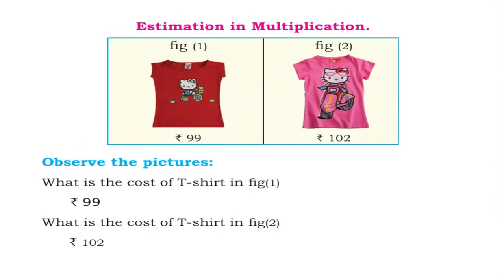Before going to exercise, see some concepts. Estimation in Multiplication: Estimate to 10, Estimate to 100, Estimate to 1000, Estimate to 10,000 — also called Round off to 10, Round off to 100, Round off to 1000, Round off to 10,000, etc.